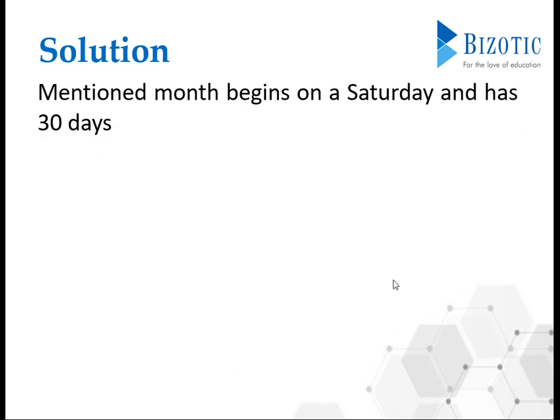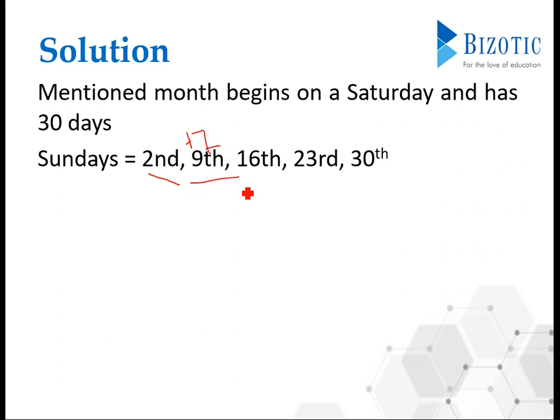That takes us to the solution. If the first day is Saturday, then the next day will be Sunday. If the second is Sunday, add 7 to it: 9th will be Sunday, then 16th, then 23rd, then 30th. You can't exceed 30 because that's where the month ends. So 5 Sundays are there.